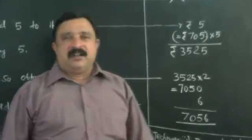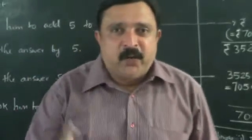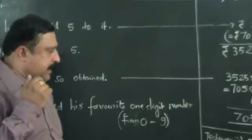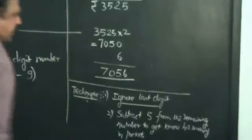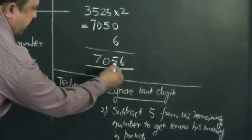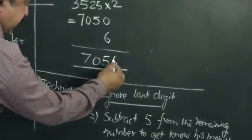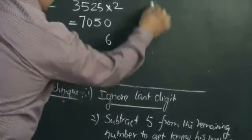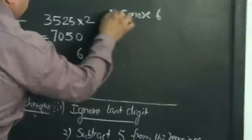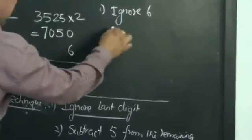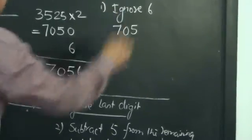7056. Within a fraction of a minute, you can say how much money he's got in his pocket. You can see the technique here. The technique is ignore the last digit. 7056, the last digit is 6, so just ignore 6. When you ignore 6, you will get 705.